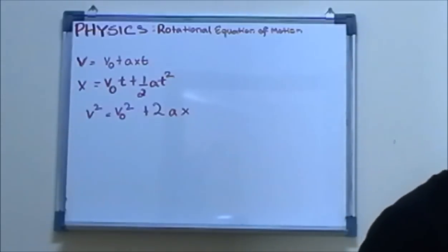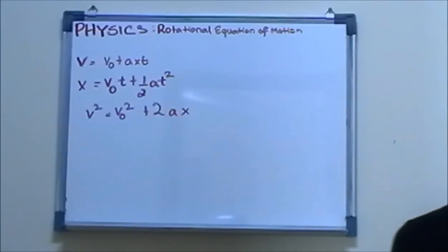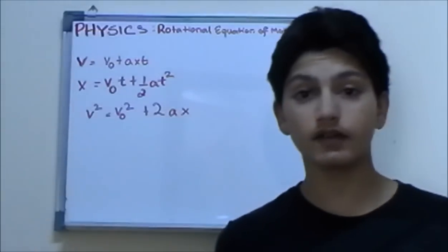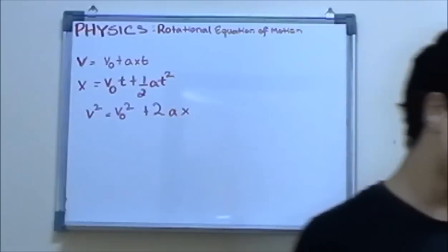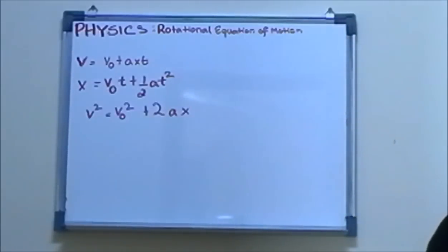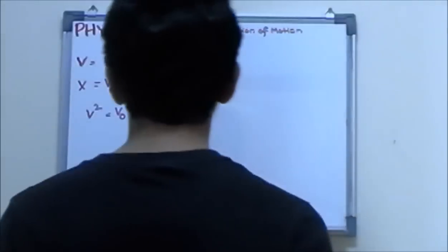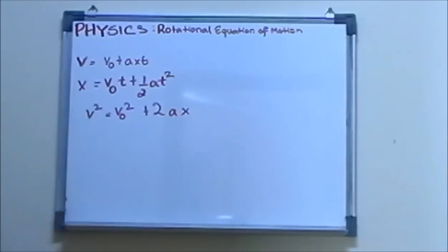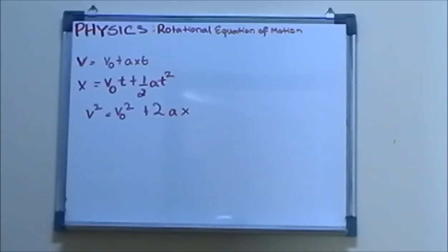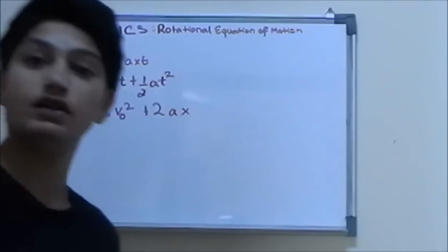The good news in this section is that it's similar to what you guys have already learned. Now, if you were to take this equation which says velocity is equal to initial velocity plus acceleration times time, and convert that into rotational form —